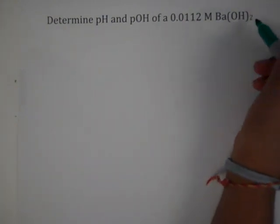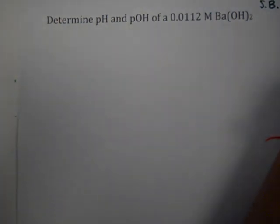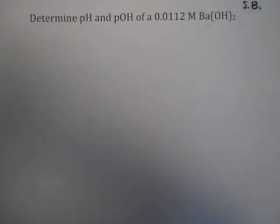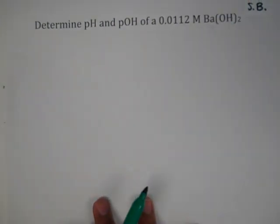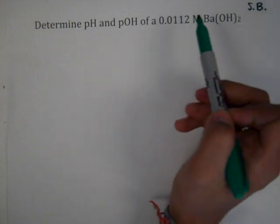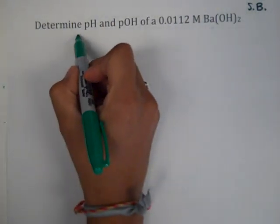We know barium hydroxide is a strong base, that's our first clue. Remember it is an alkaline earth metal plus a hydroxide, a definition of our strong base. From here we can start with either pH or pOH, but let's start with the information we have given. We have 0.0112 molar barium hydroxide.